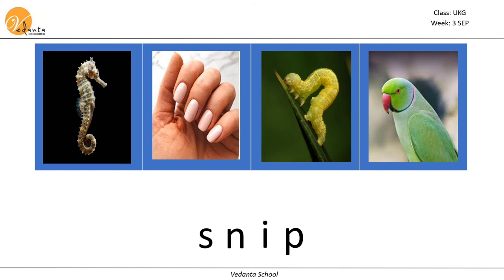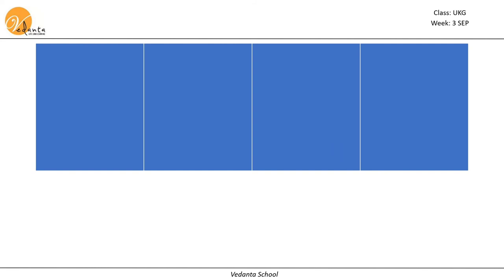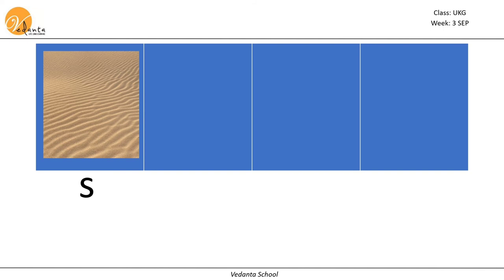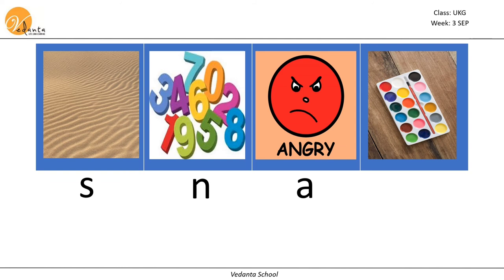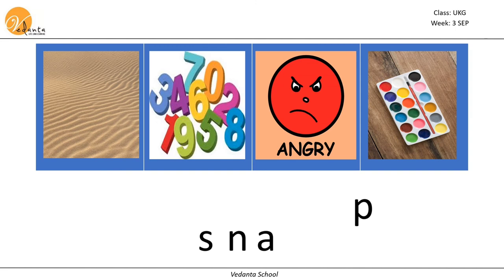Next one. The first picture is san — starts with s sound. Number starts with n sound. Angry starts with a sound. And pain starts with p sound. Now let's blend the first two consonants: sn. Then add a and p — snap. Snap.